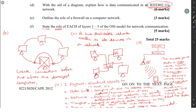Part F assessed candidates' knowledge of the layers of the OSI model and their corresponding functions. Though it was well attempted, knowledge of the names, order of layers, and purpose of each layer was lacking overall. The key was to identify layers one to five only — layer one being the physical layer, layer five being the session layer. A few candidates labelled the application layer as layer one, making the answer partially incorrect.